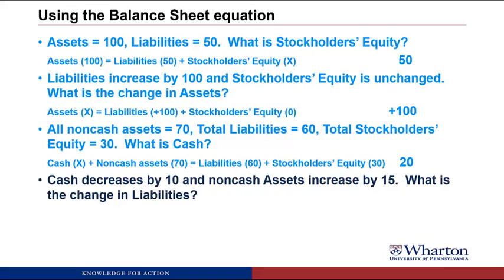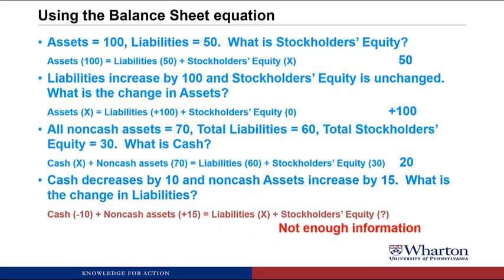Next: cash decreases by 10 and all non-cash assets increase by 15 — what is the change in liabilities? We have to be careful here. Cash goes down by 10 and non-cash assets go up by 15, but we don't know what happened to stockholders' equity, so we actually don't have enough information to solve this. If we knew stockholders' equity was unchanged, then liabilities would have to go up by 5, but without knowing that, we technically can't answer this one.